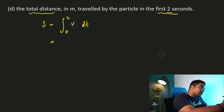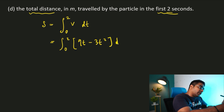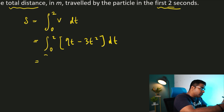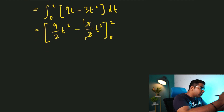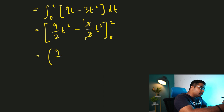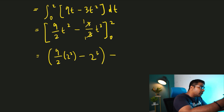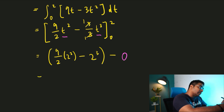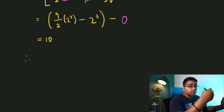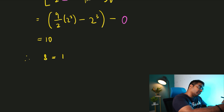So we integrate 9t minus 3t squared with respect to t from 0 to 2. This gives 9/2 t squared minus 3/3 t cubed, evaluated from 0 to 2. Since 3/3 = 1, we substitute t = 2: (9/2)(4) minus (8) = 18 minus 8 = 10. Substituting t = 0 gives 0. Therefore, the total distance traveled is 10 meters.